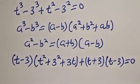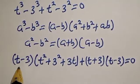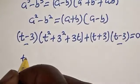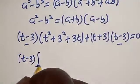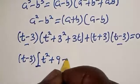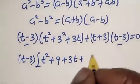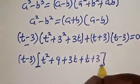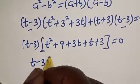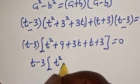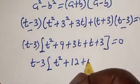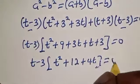This is equal to 0. Now if you look at this, we have t minus 3 here and t minus 3 here. Let's bring it out. t minus 3 bracket t squared plus 9 plus 3t plus t plus 3 is equal to 0. This gives t minus 3 bracket t squared plus 9 plus 12 plus 3t plus t, which is 4t, equal to 0.